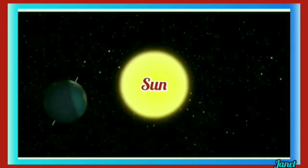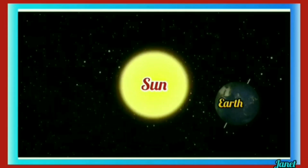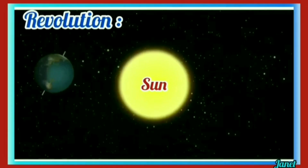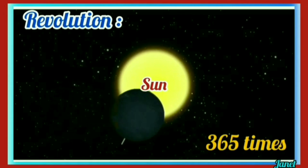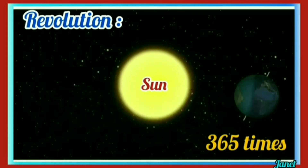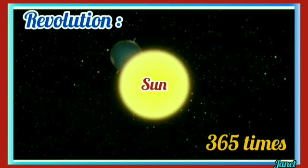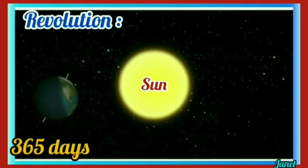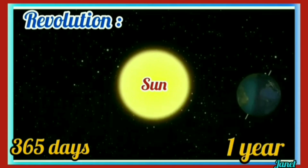Children, at the same time, the earth is moving around the sun. This is called a revolution. It revolves 365 times to go one round around the sun, which means 365 days. This we call it as one year.